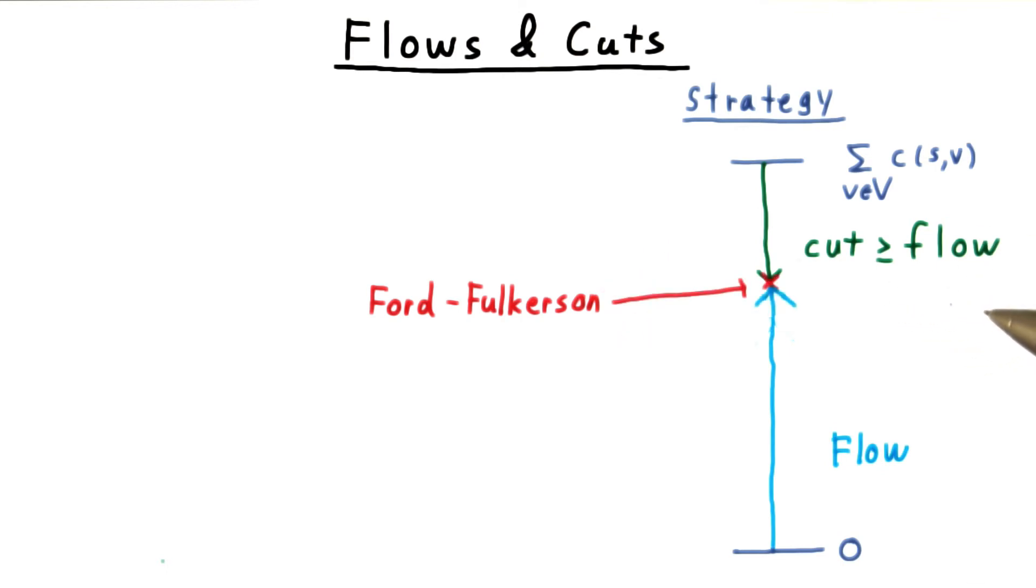Even better, however, we'll see that the flow produced by Ford-Fulkerson has the same value as a cut. And since this cut serves as an upper bound on all possible flows, this flow must be a maximum. That's where this argument will end up.